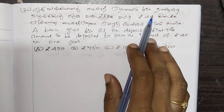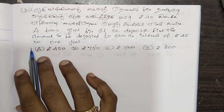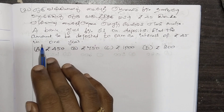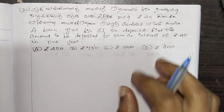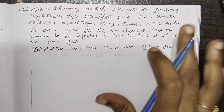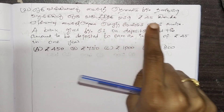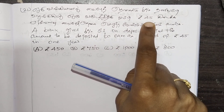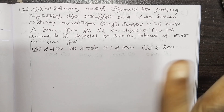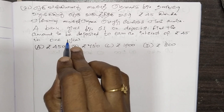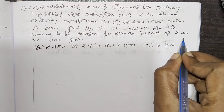One bank gives 6% interest on deposits. Find the amount to be deposited to earn an interest of 45 rupees in one year. So, if we join a bank, we will give you an amount. We will give you a 6% rate of interest for one year.